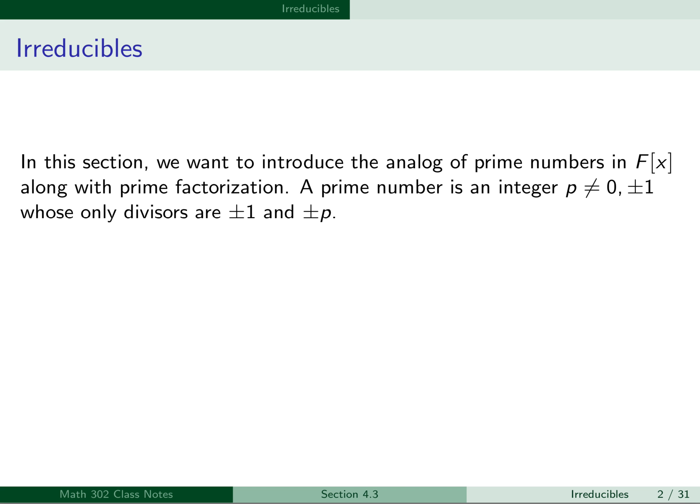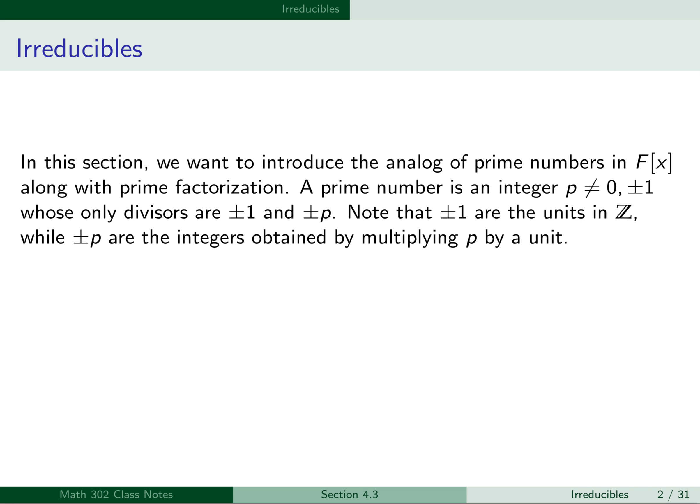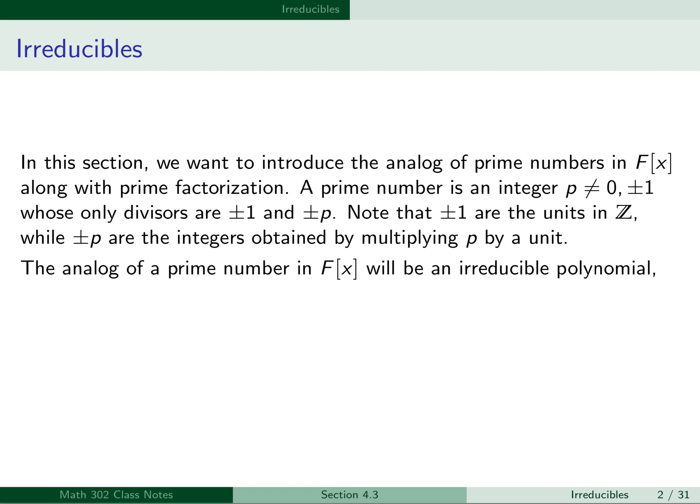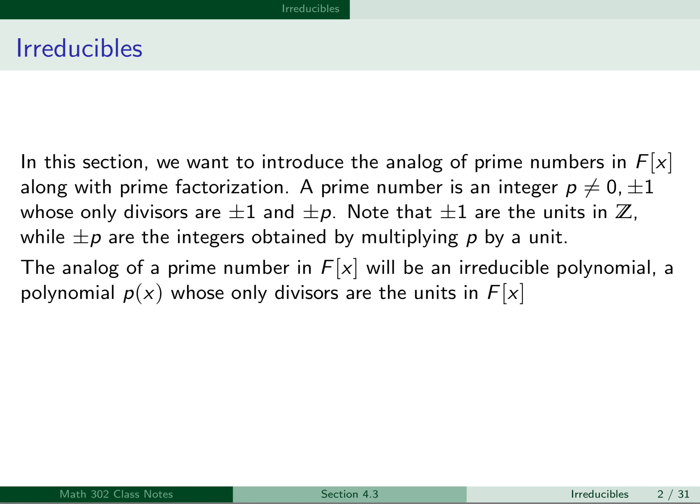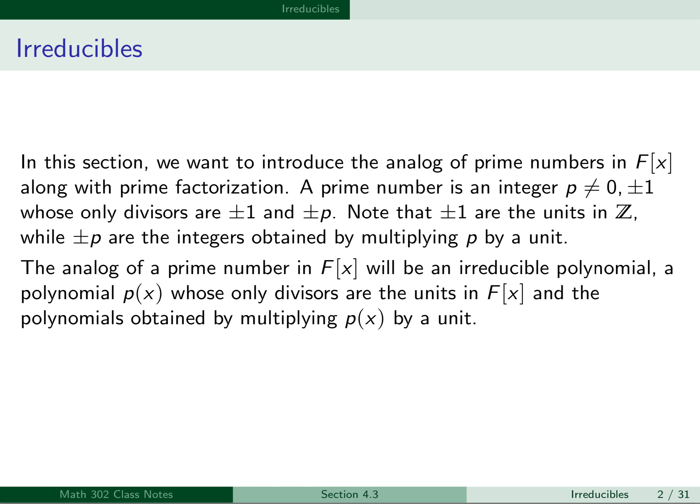Recall that a prime number is an integer p, not equal to 0 or ±1, whose only divisors are ±1 and ±p. Note that ±1 are the units in Z, while ±p are the integers obtained by multiplying p by a unit. The analog of a prime number in the polynomial ring F[x] will be an irreducible polynomial, a polynomial p(x) whose only divisors are the units in F[x] and the polynomials obtained by multiplying p(x) by a unit.